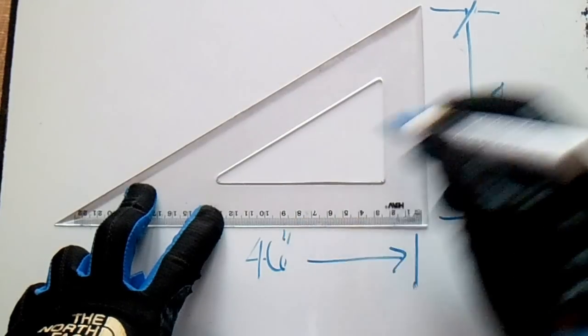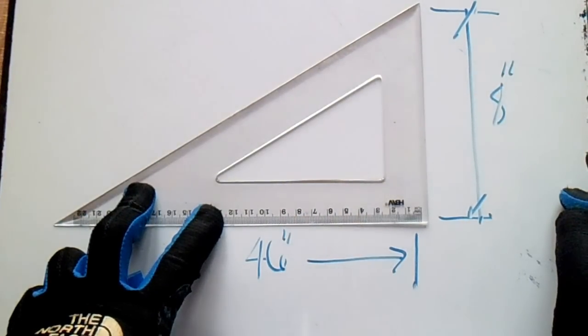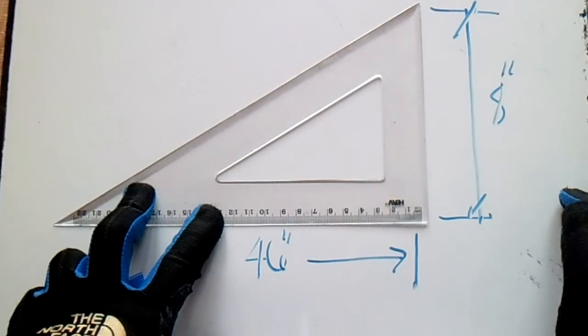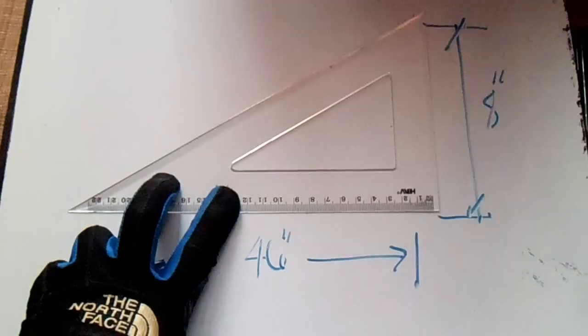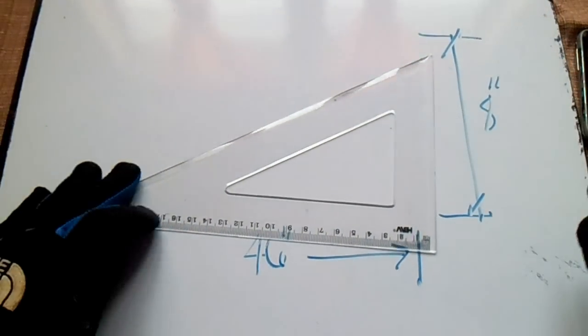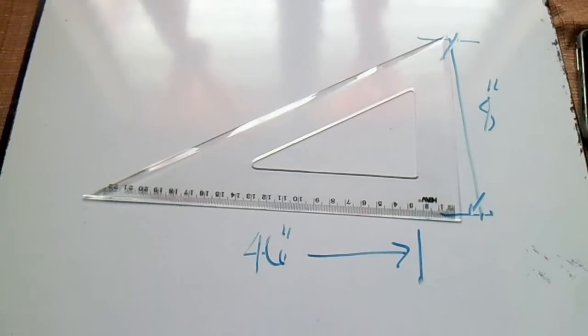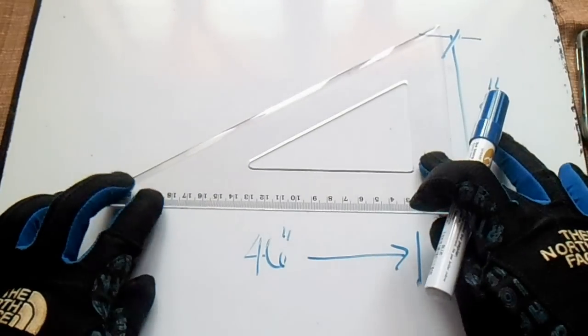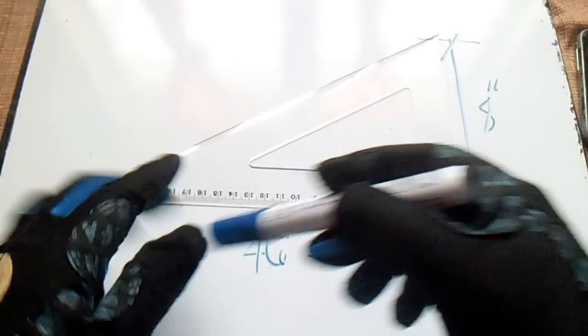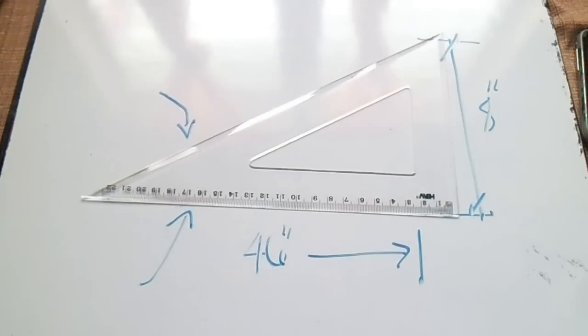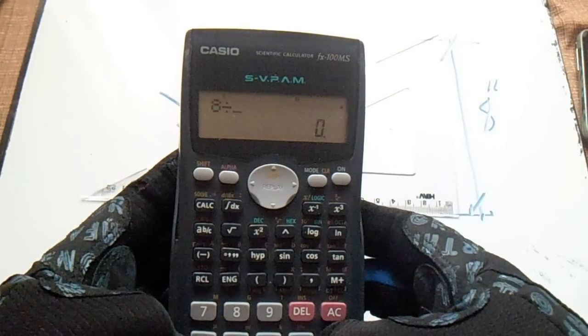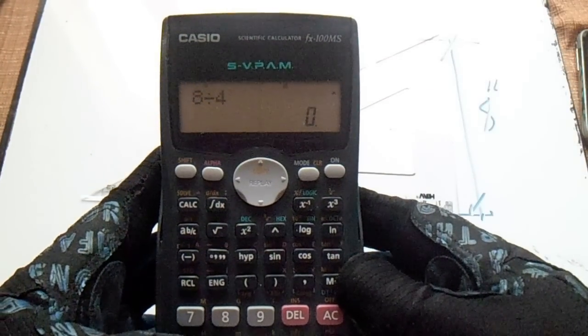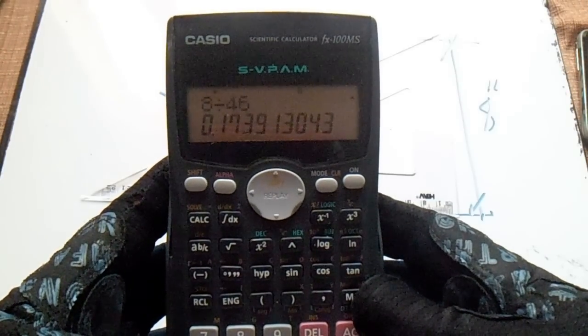We have 8 inches here. We will find the theta or the tangent, or the degrees. To find that, just divide 8 by 46, which equals 0.17.